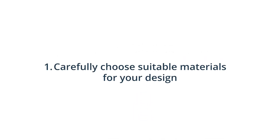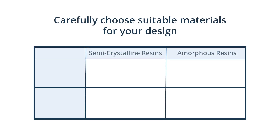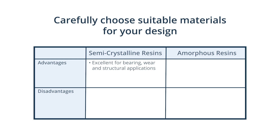Tip 1: Carefully choose suitable materials for your design. Thermoplastic resins used for injection molding fall into two categories that both have their own advantages and disadvantages. Semi-crystalline thermoplastics are excellent for bearing, wear and structural applications, and have good chemical and electrical resistance, as well as a lower coefficient of friction.